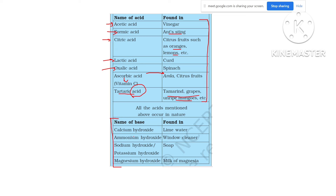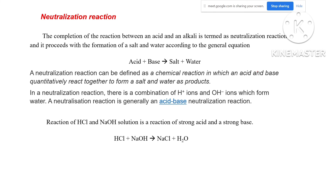There are also some bases found in nature. Calcium hydroxide is present in lime water. Ammonium hydroxide is present in window cleaner. Sodium hydroxide and potassium hydroxide are contents of soap. Milk of magnesia is magnesium hydroxide — when we have acidity, the doctor prescribes milk of magnesia to neutralize the extra acid secreted by our stomach. ENO contains sodium carbonate and sodium bicarbonate, which are also weak bases that neutralize the excess acid generated by our body.